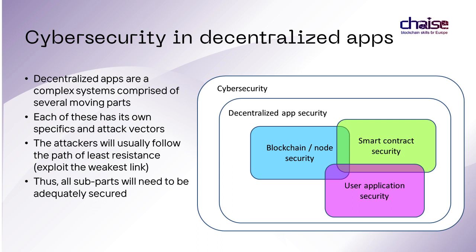Secondly, there are smart contracts written on top of the blockchain platform. These can contain unvetted user code, which means there are no guarantees about their correctness or reliability. Indeed, many real-world incidents and hacks prove that it is a popular and easy-to-exploit attack vector. Finally, applications for end-users need to link these components together and facilitate a user-friendly mode of interaction — for example, presenting a graphical user interface or APIs for dedicated hardware. All these building blocks are usually developed with different technologies and rely on different paradigms, meaning they can also contain independent exploits and attack vectors. Since attackers follow the path of least resistance, all subparts will need to be adequately secured.